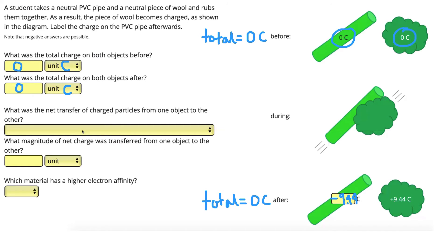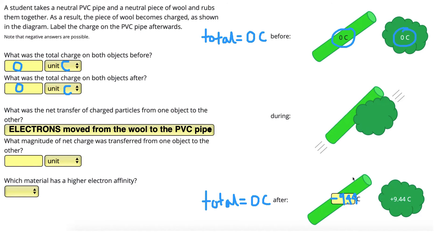So we've figured out our charges on our different objects. Now to describe what happened — what was the net transfer of charged particles? We know that protons cannot move; they're stuck securely in the nucleus. However, electrons can move. Since the rod has become more negatively charged, it must have gained electrons. Electrons have moved from the wool onto the PVC pipe. That's why the wool ends up positively charged in the end — because it's lost electrons, it has more protons comparatively and therefore is positively charged.